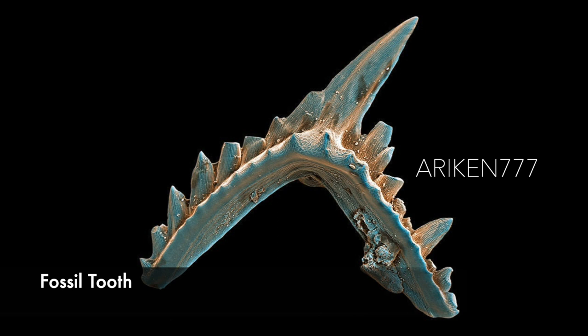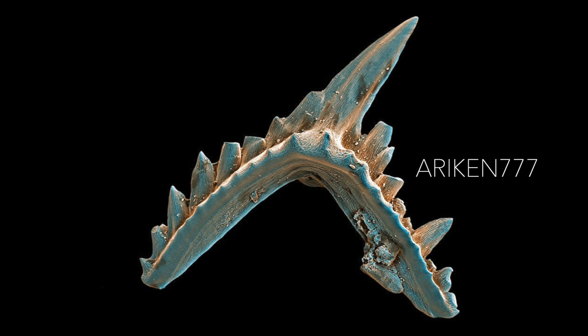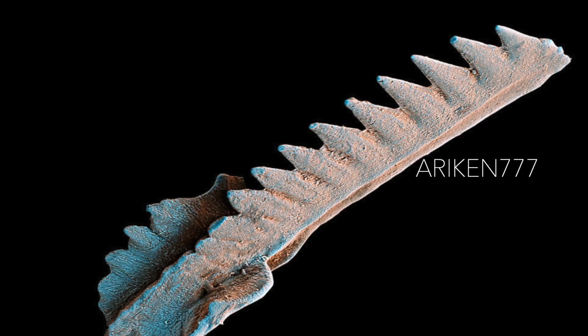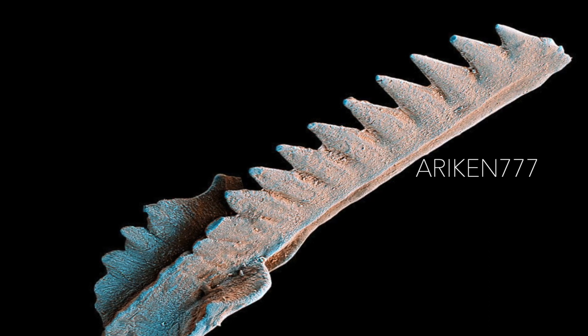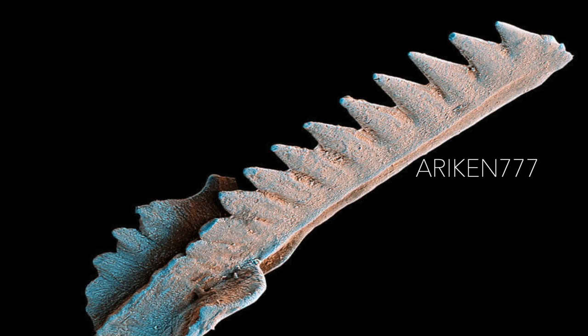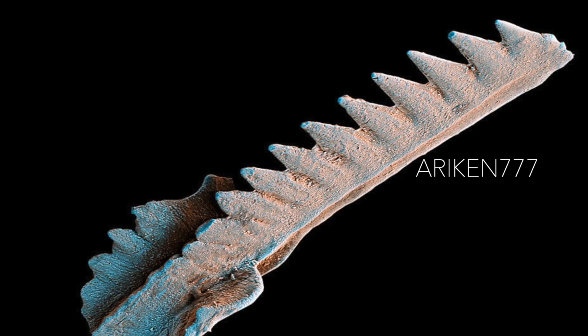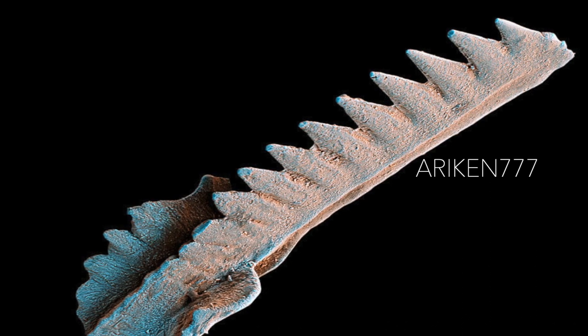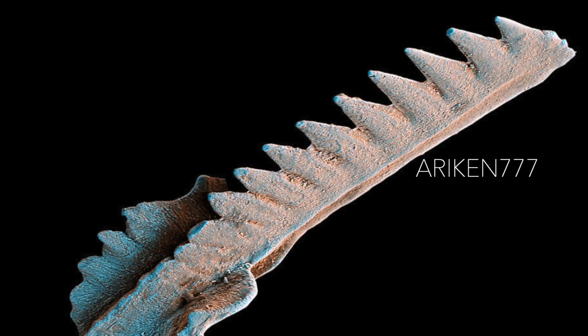These are fossilized teeth of conodonts, which are an extinct group of agnathan jawless vertebrates resembling eels. They existed in the world's oceans for over 300 million years, from the Cambrian to the beginning of the Jurassic. For many years they were known only from their tooth-like oral elements found in isolation, called conodont elements. Conodont elements are widely used as index fossils — fossils used to define and identify geological periods. Knowledge about their soft tissues remains limited.